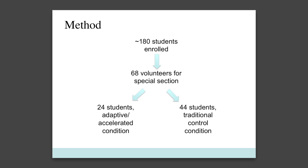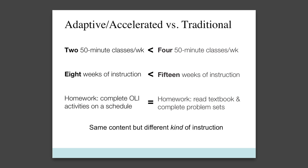So how did we conduct this study? Well, we wanted to make the comparison as fair as possible, so we got the list of all the students enrolled in the introductory statistics course and invited them to participate. Among those who were interested, we randomly assigned half to the adaptive accelerated condition. This condition incorporated the online course. The other half of the students served as a control group in the traditional setting. These students met for class three times a week and had one computer lab session per week.